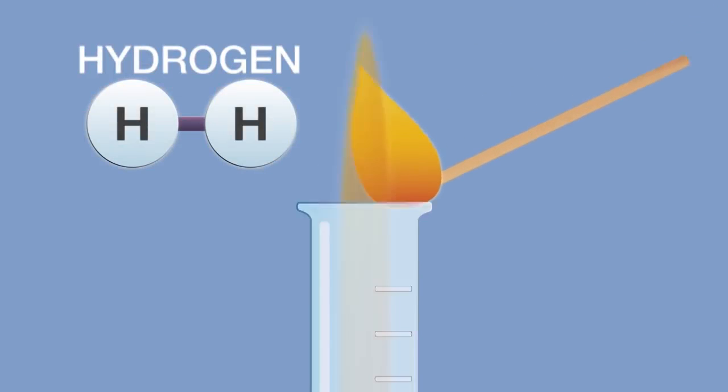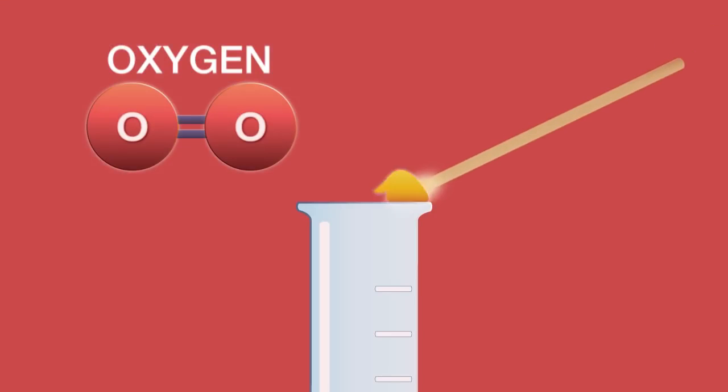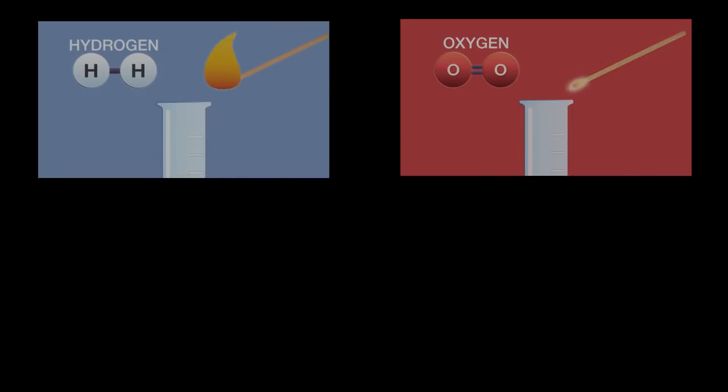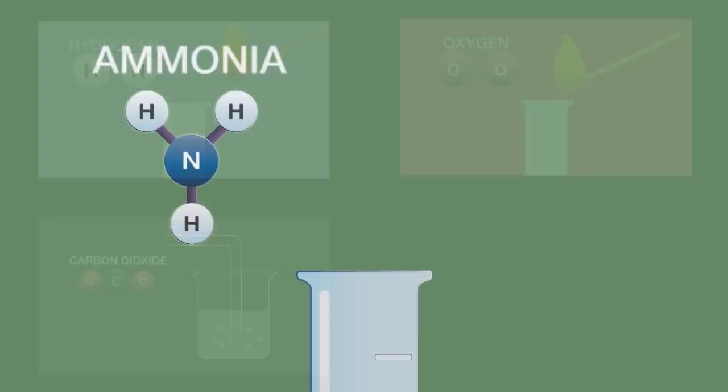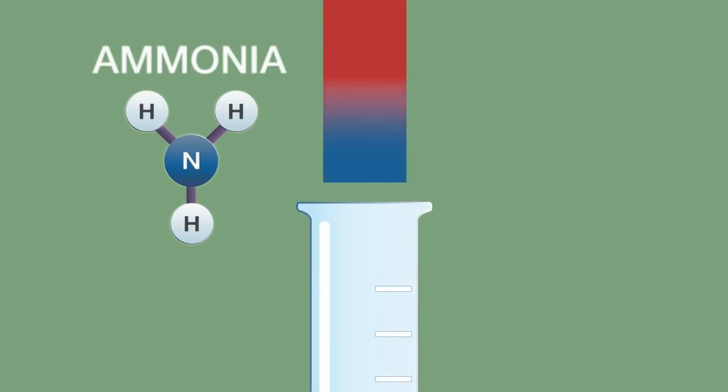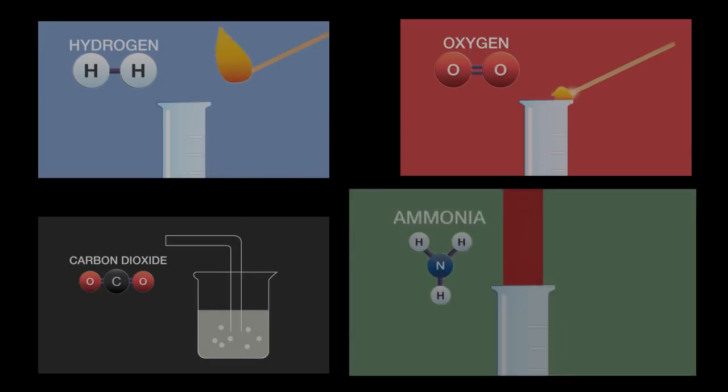In conclusion, hydrogen burns with a squeaky pop. Oxygen relights a glowing splint and carbon dioxide turns lime water milky. Ammonia turns damp red litmus paper blue and forms a white smoke of ammonium chloride in the presence of concentrated hydrochloric acid.